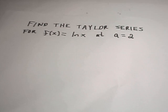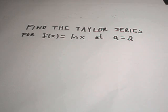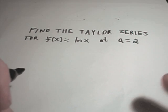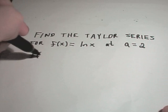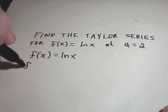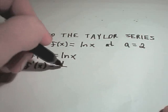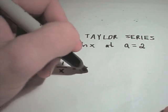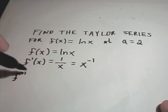So in this one we're going to find the Taylor series for the function, the natural logarithm of x, and we'll do this at the value a equals 2. So the first thing I'm going to do is write down my original function and then start taking derivatives. The derivative of ln of x is 1 over x, but I'm just going to write that as x to the negative first, just for derivative-taking purposes.